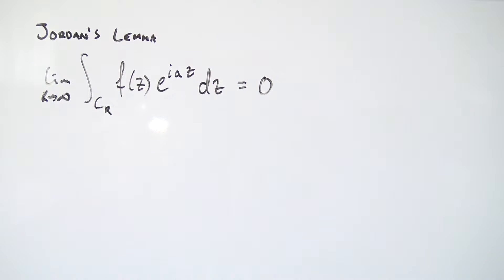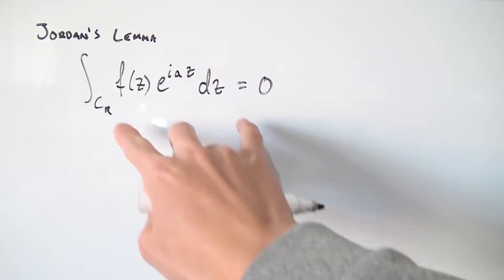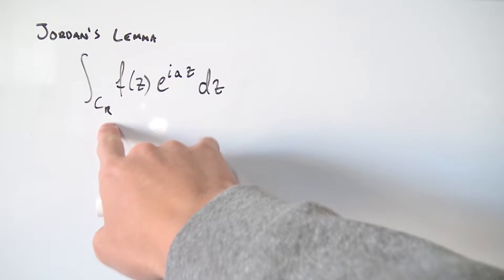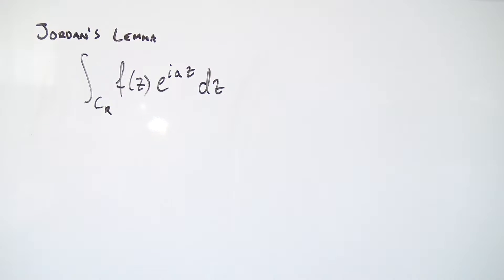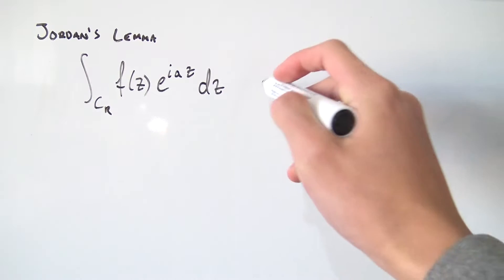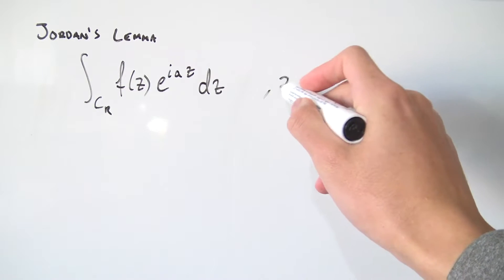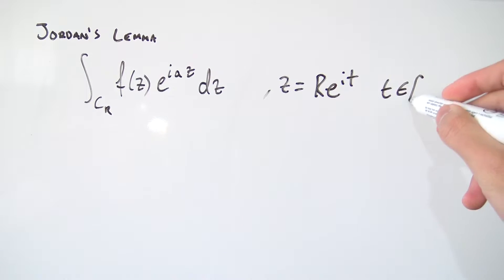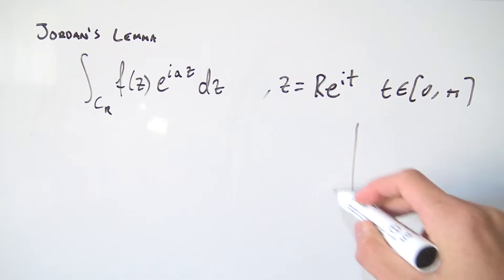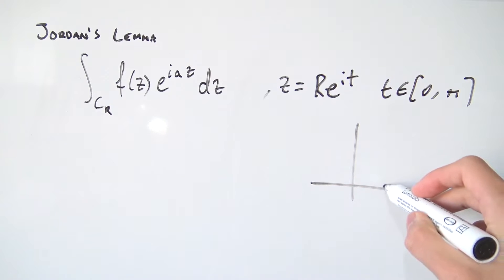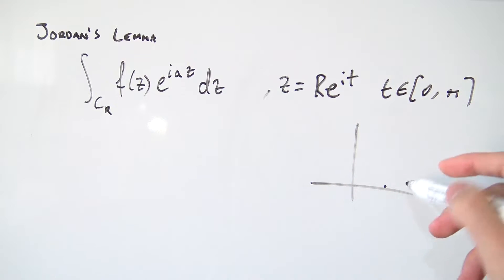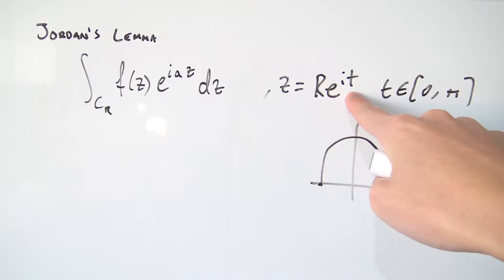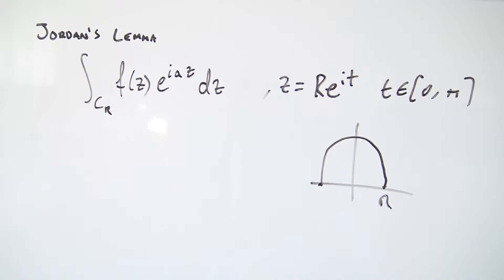Let's keep our function as f(z) and get into the actual proof. Let's ignore the limit first and just work with the integral. If we have some integral over some curve, it would be nice if we can parameterize this path. A nice way to do this is to let z = re^(it), where t goes from 0 to π. Starting at t = 0 and going all the way around to π radians, our radius is r, so this parameterization works.